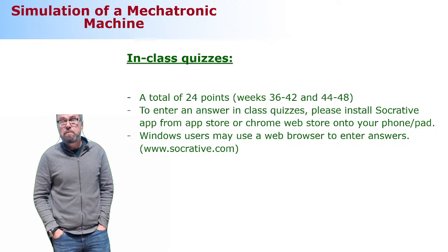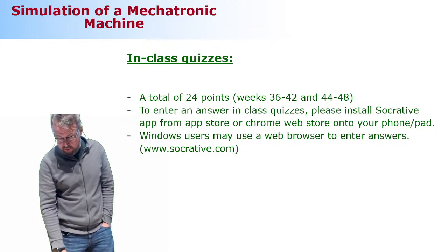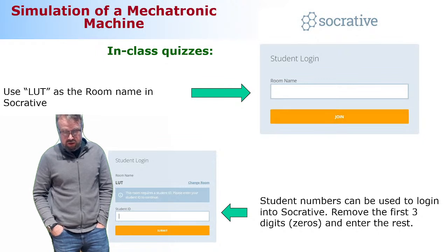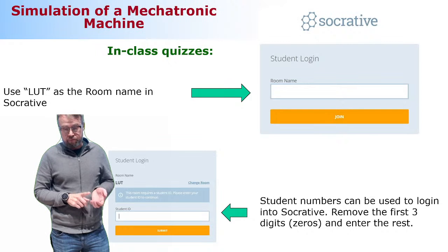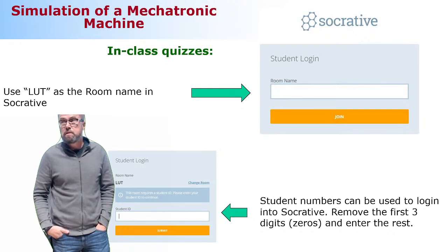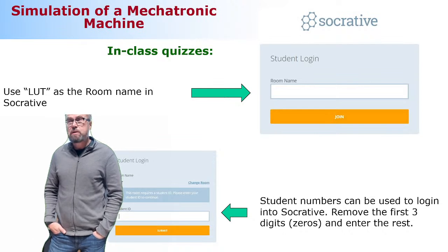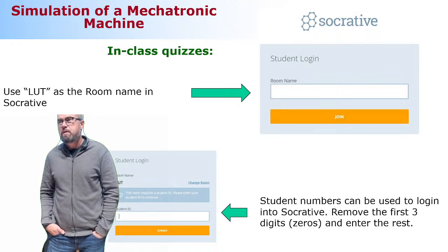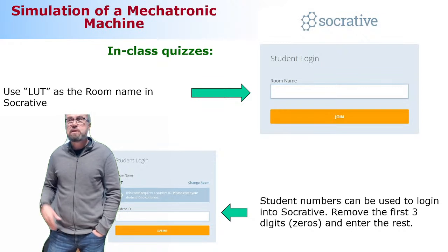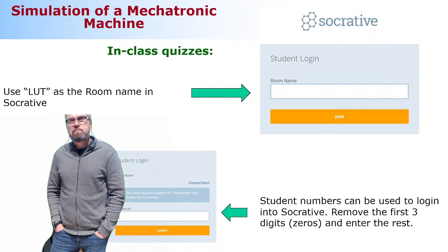So online participants, this will be a good time to install Socrative to your mobile phone or iPad. You can log into Socrative.com. You first need to select the student login and type the room name, which is LUT. Then you need to put your student number there. If you have zeros in your student numbers, don't use them. Take them off. And momentarily, there's going to be first in-class quizzes making a contribution to your final grading.